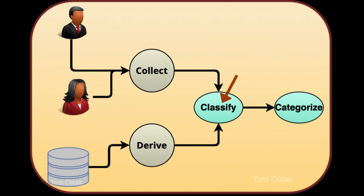We must classify and categorize the data we choose to create and keep. Classification measures the sensitivity of the data and how important it is to protect its confidentiality, integrity, and availability. A measure of the value to the business of a data set is depicted with its categorization. One popular approach consists of three levels: public, private, and restricted.